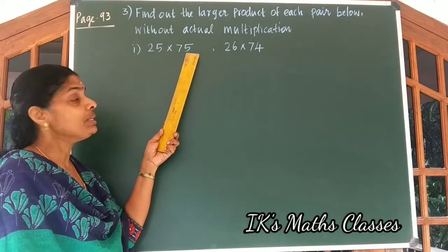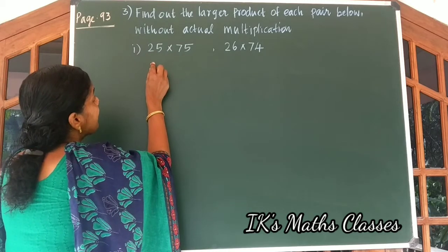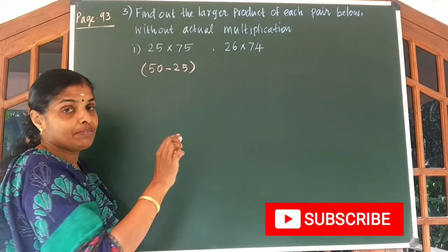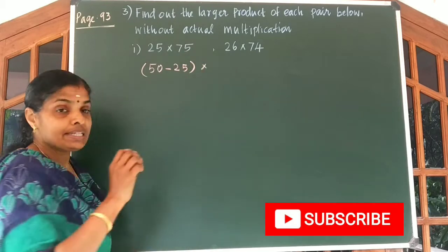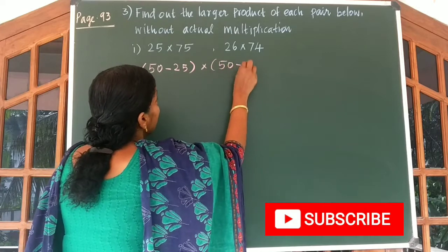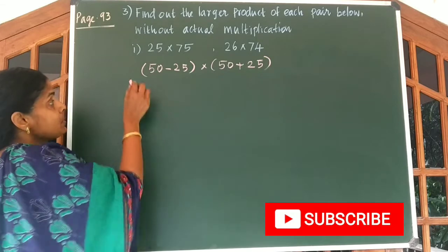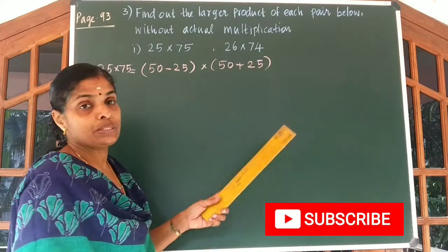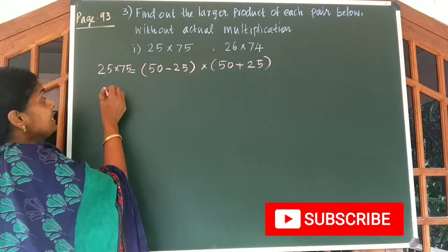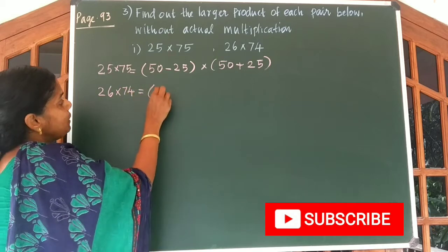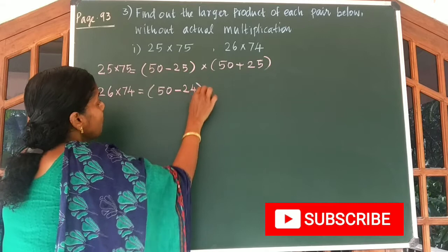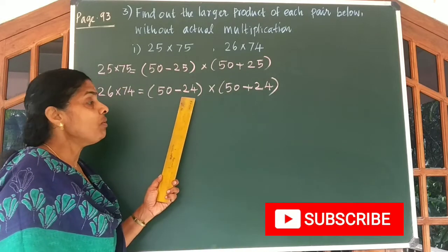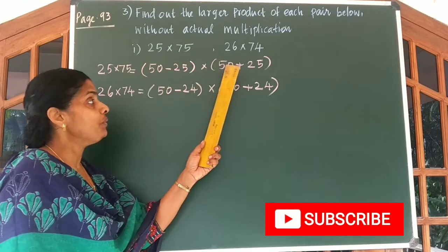Now 25 into 75 can be written as: 25 can be written as 50 minus 25, and 75 can be written as 50 plus 25. Similarly, 26 into 74 can be written as 50 minus 24 into 50 plus 24. These two are of the form (A minus B) into (A plus B).